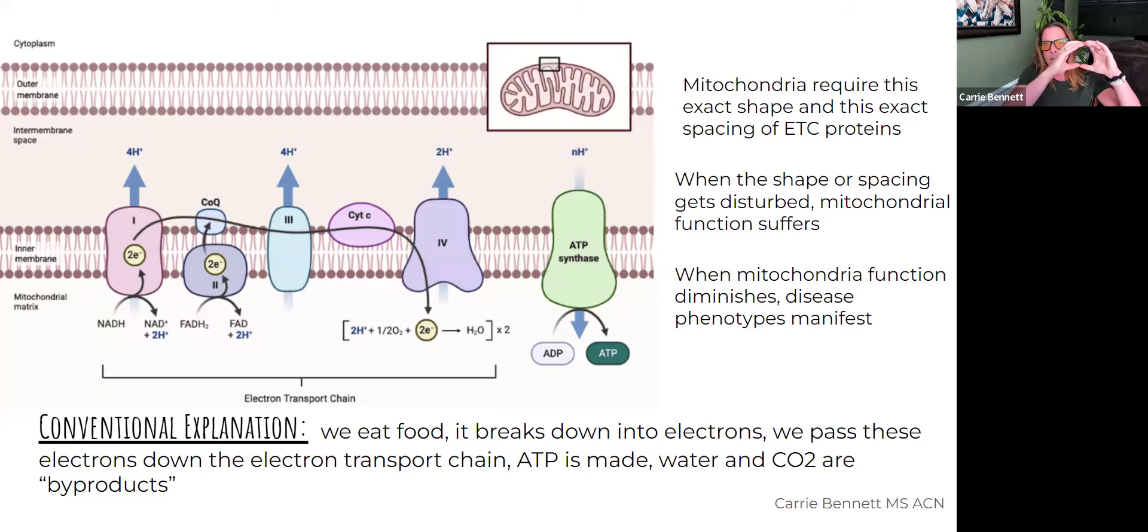And they build up this pressure and the out route for that pressure when a mitochondria is just functioning normally is to go through the ATPase, and the speed with which this proton goes back through the ATPase generates ATP.